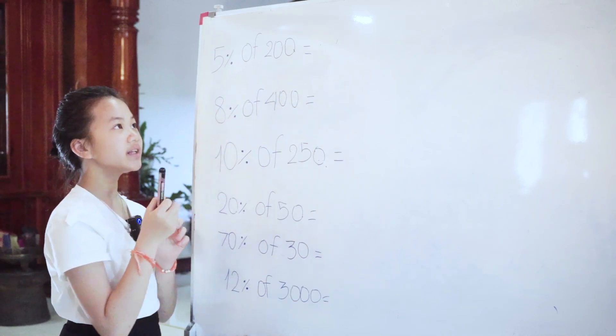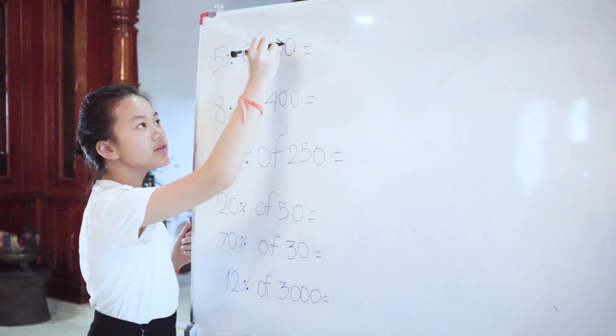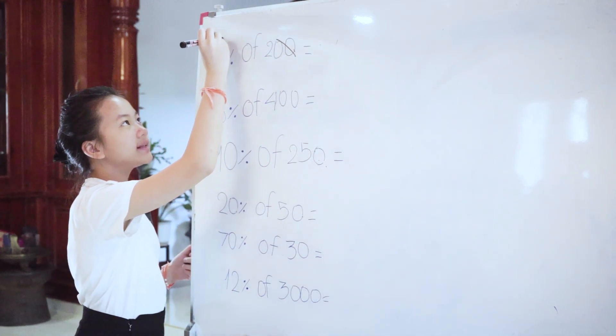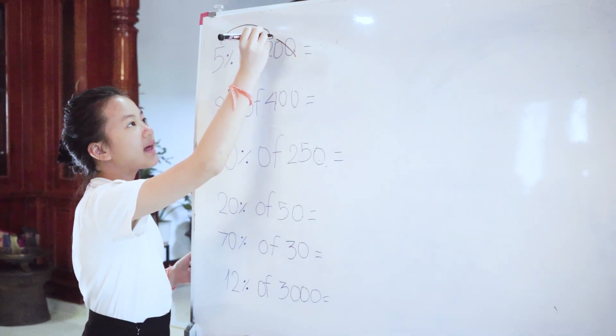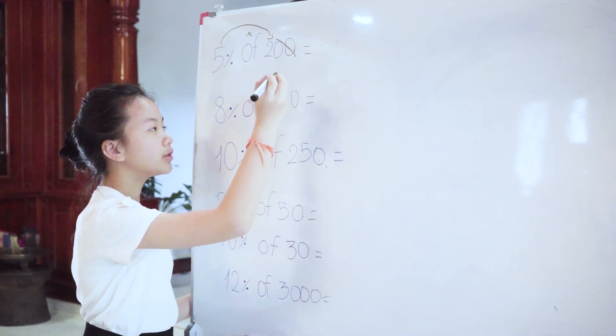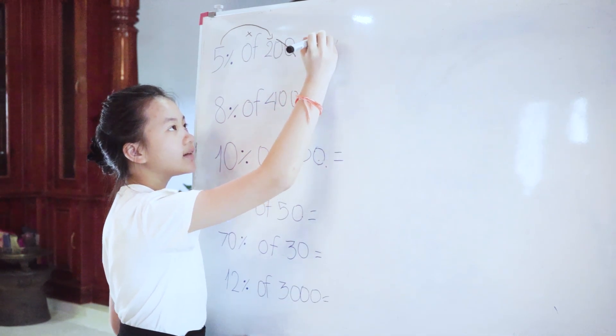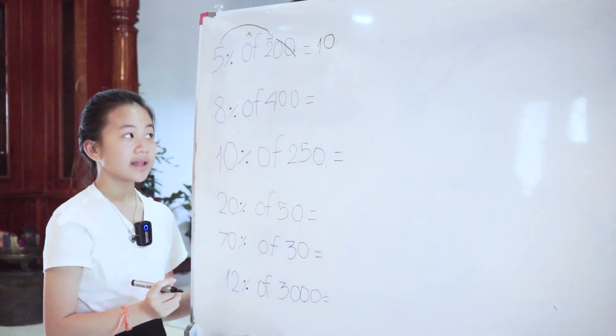5% of 200, you cut the zero out, and then 5 x 2 equals 10.